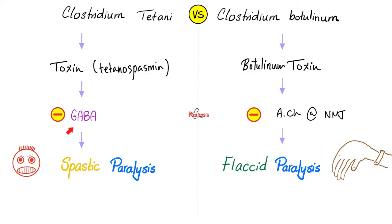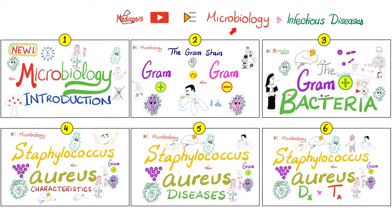As you know, Clostridium tetani inhibits GABA release — that's why it causes spastic paralysis, because GABA is inhibitory, and inhibition of inhibition is excitation. But Clostridium botulinum decreases the release of acetylcholine. Acetylcholine is important for muscle contraction. No acetylcholine, no muscle contraction — i.e., flaccid paralysis. For maximum understanding and retention, please watch the videos in this playlist in order.